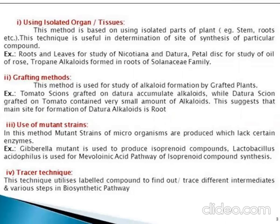The grafting method is used for the study of alkaloid formation by grafted plants. In this method, parts of two plants are mixed to form a hybrid. For example, tomato shoots grafted on Datura accumulate alkaloids, while Datura shoots grafted on tomato do not produce alkaloids. This suggests that the main site for the formation of Datura alkaloids is the root.